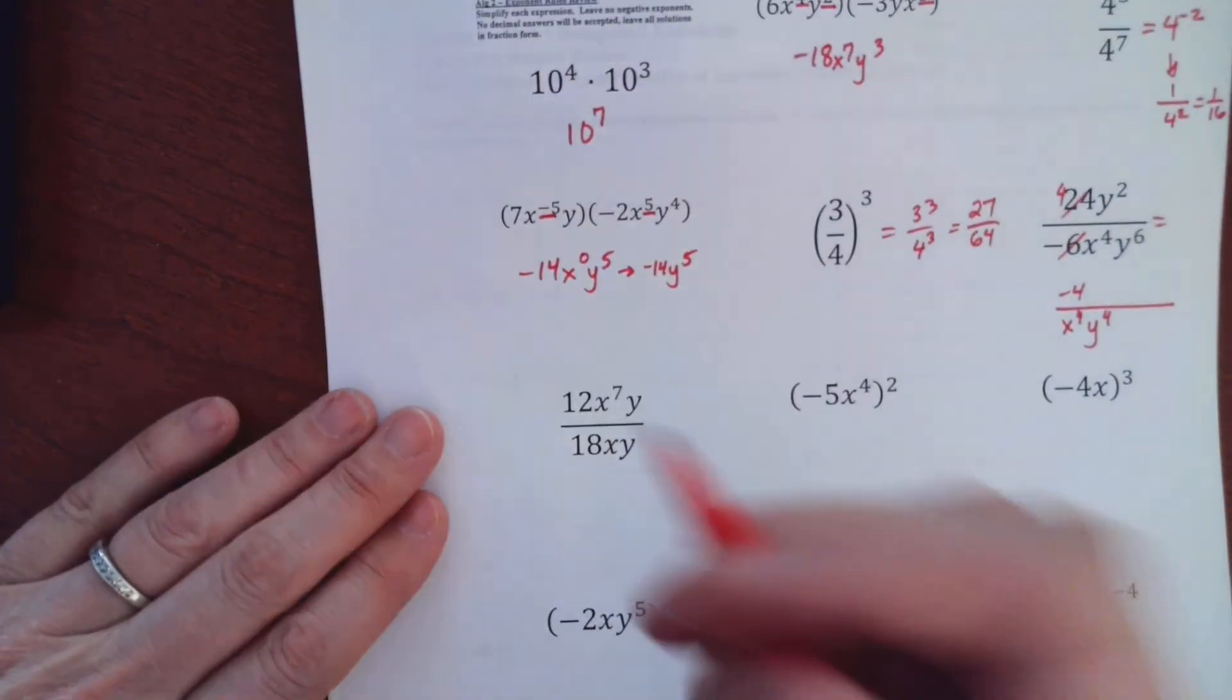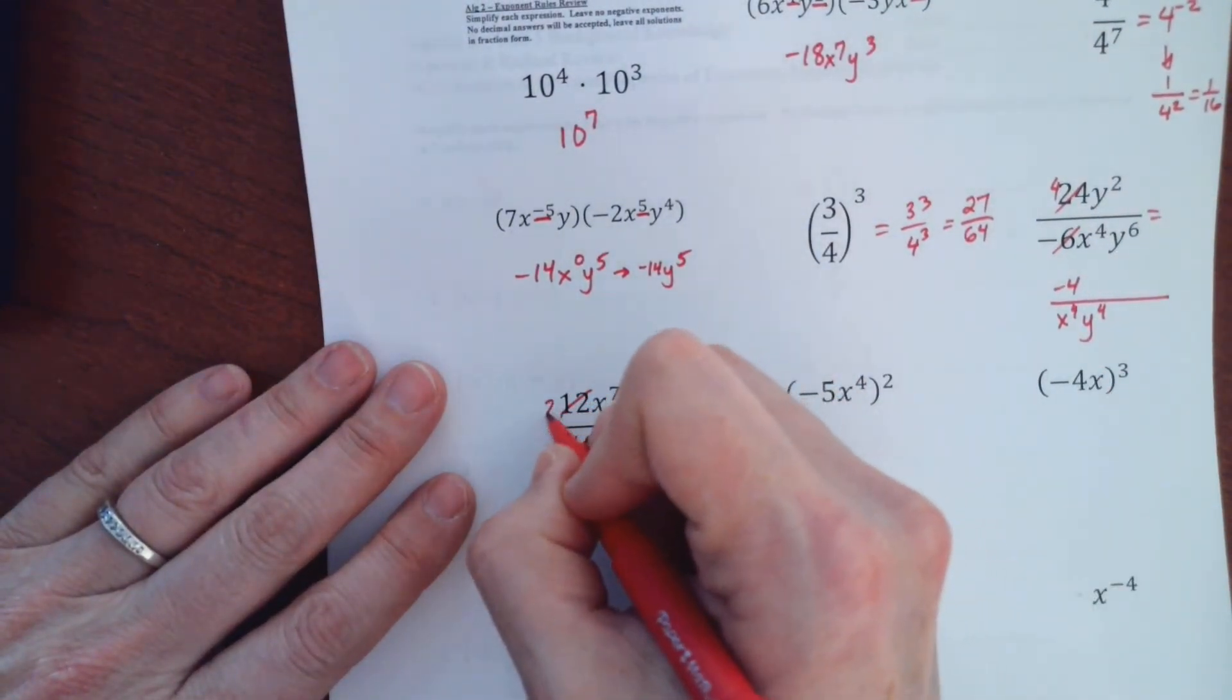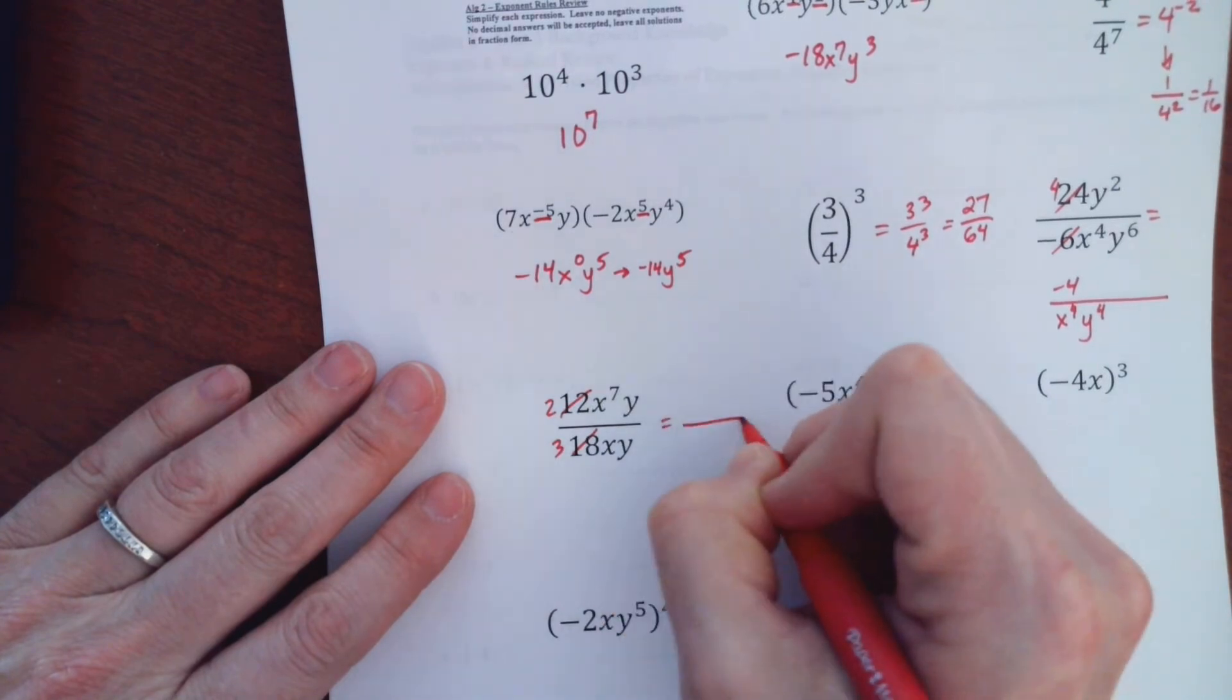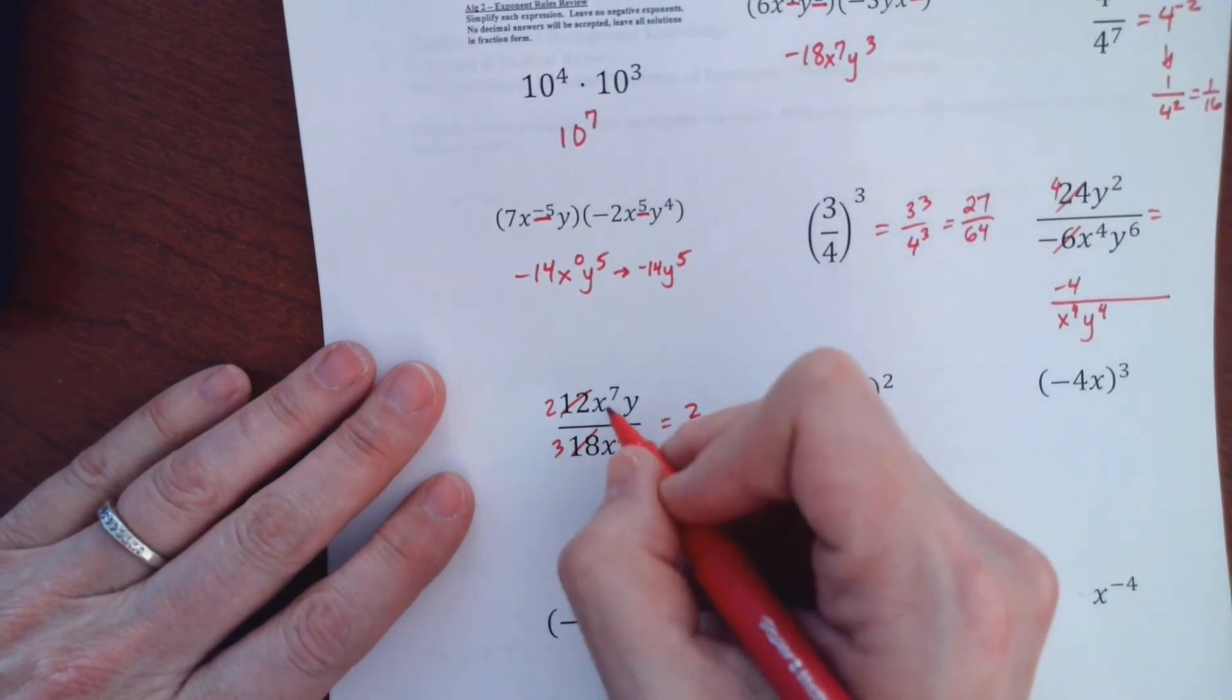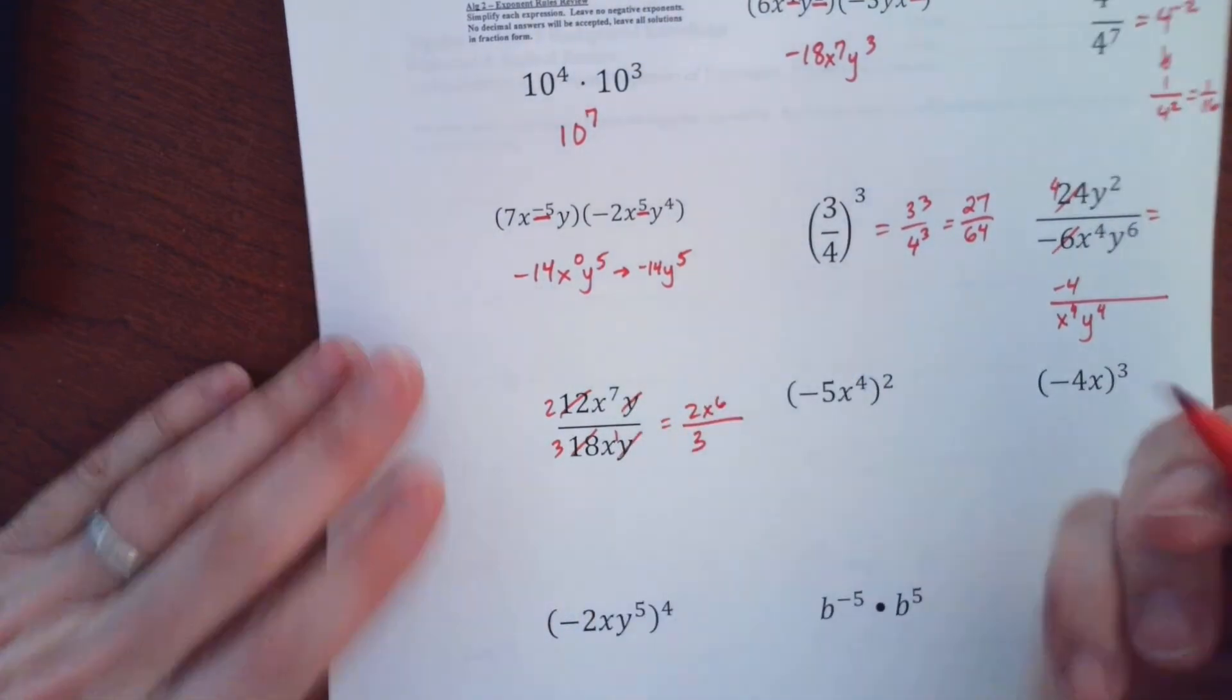So same idea for this problem. 12 and 18 both divide by 6. They make a 2 and a 3. So my answer is going to be 2 with a 3 there. 7 minus 1 is 6, positive 6. And the Ys just totally cancel. So done.